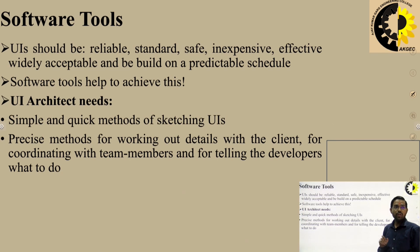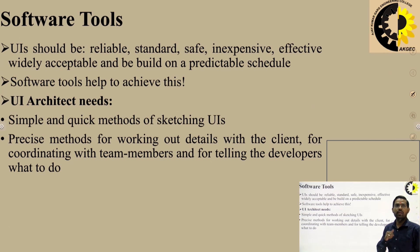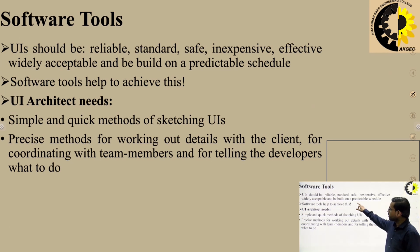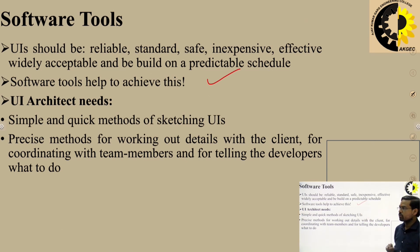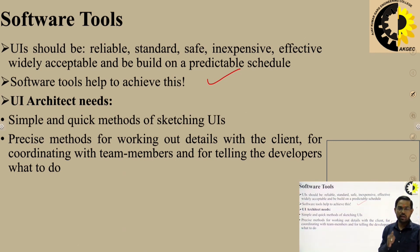Software tools must be reliable, standard, safe, inexpensive, effective, widely acceptable, and predictable. Our software tools help to achieve this. A particular software tool must be very reliable — if it is not reliable, we cannot use that type of software tool.